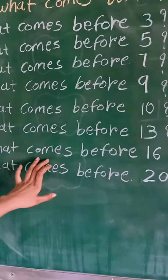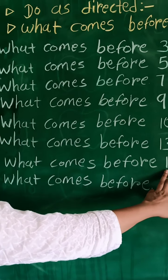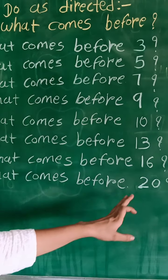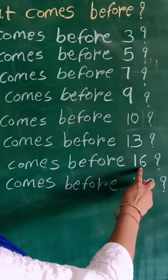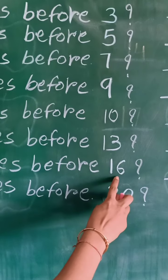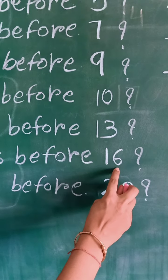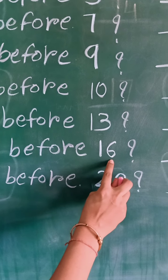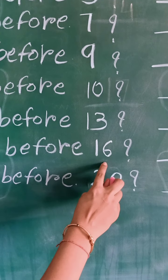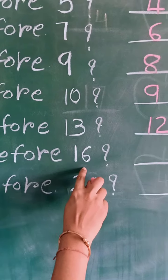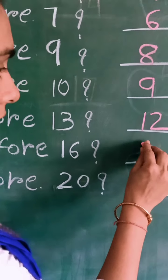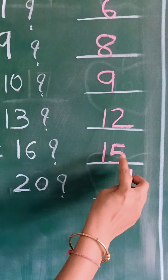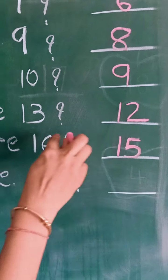What comes before 16? We speak 11 to 16 numbers: 11, 12, 13, 14, 15 and 16. Which number we speak before 16? Number 15. So write here number 15. 15, 16.